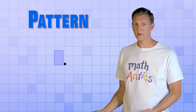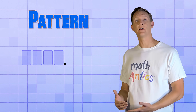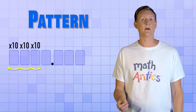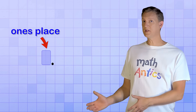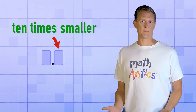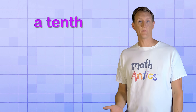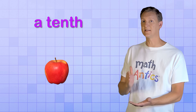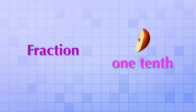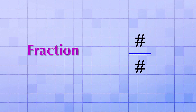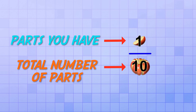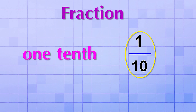Well, looking back at our number place pattern, we see that each time we move to the left, the new number place counts amounts that are 10 times bigger than the previous place. So each time we move to the right, that place should count amounts that are 10 times smaller than the previous place. Since the ones place counts by ones, the number place to the right of it should count by amounts that are 10 times smaller than 1. The amount that's 10 times smaller than 1 is called a tenth. It's the amount you get if you take one whole and divide it into 10 equal parts, keeping just one of them. 1 tenth is what we call a fraction, and fractions are written using a special notation that has two numbers with a line between them. The number on the bottom tells how many equal parts a whole amount is divided into, and the top number tells you how many of those parts you have. So the fraction 1 tenth is written like this: 1 over 10.